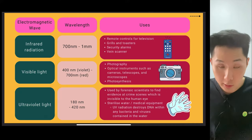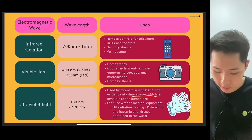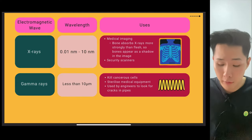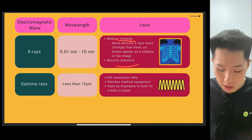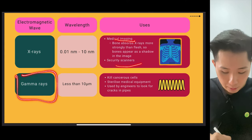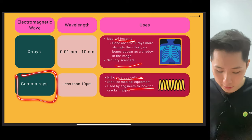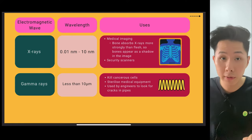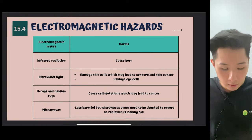Ultraviolet is used by forensic scientists to find evidence at crime scene. Sterilize water and medical equipment. Whereas X-ray is something that we are more familiar with. Medical imaging, security scanners. Gamma ray, kill cancerous cells, used by engineers to look for cracks. I didn't elaborate on each of them because I think that will make the video very lengthy. Feel free to Google yourself if you need to.